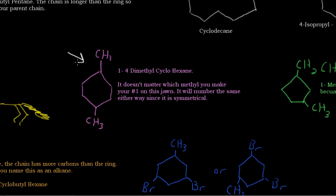This here is 1,4-dimethyl-cyclohexane. It doesn't matter which methyl you make the number 1 on this. It will number the same way either way because it's symmetrical. There is a plane of symmetry right here. So that's 1,4-dimethyl-cyclohexane. If you name this one, this would be 2, 3, 4. Or if you name this one, this would be 2, 3, and then 4. So it doesn't really matter.